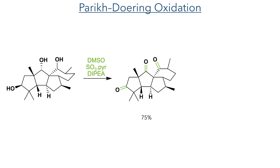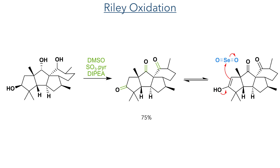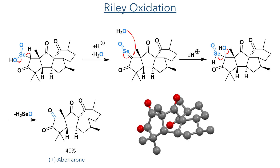With this transformation complete, they would then re-oxidise the alcohol back to the carbonyl level, together with the other two hydroxyl groups present in the molecule. This was carried out using a Parikh-Doering oxidation, which we saw earlier, and this product was then subjected to a Riley oxidation. In this reaction, selenium dioxide reacts with the enol tautomer of the ketone. This produces a seleninic acid which undergoes a proton transfer and the elimination of water to generate an oxoselenilidene, which is then attacked by water. A proton transfer then occurs and selenic acid is eliminated to produce the alpha-hydroxy ketone and complete the total synthesis of Aberarone, with the structure unambiguously confirmed using X-ray crystallography.